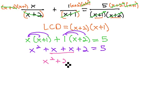Combining like terms gives us x squared plus 2x plus 2 equals 5.